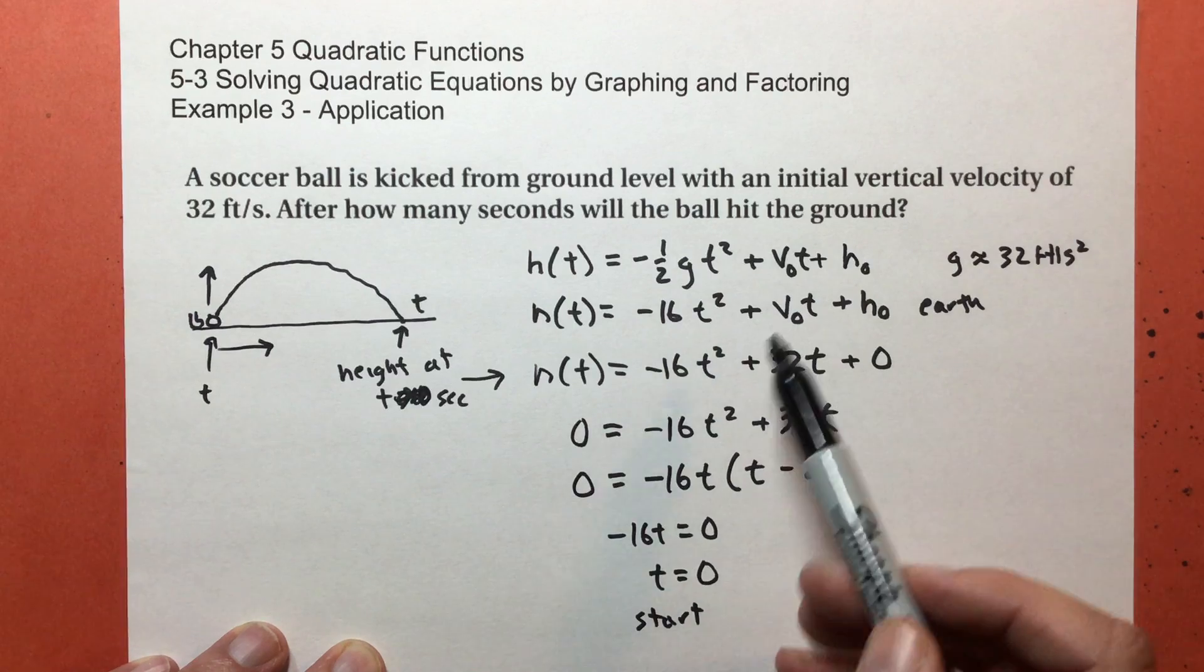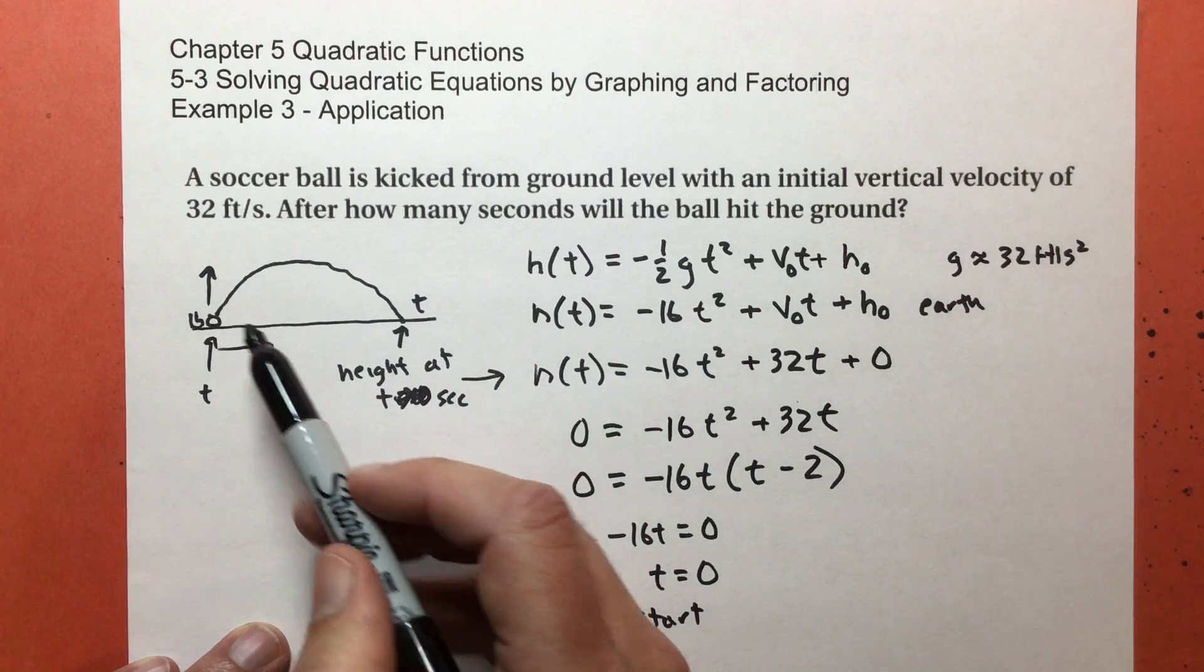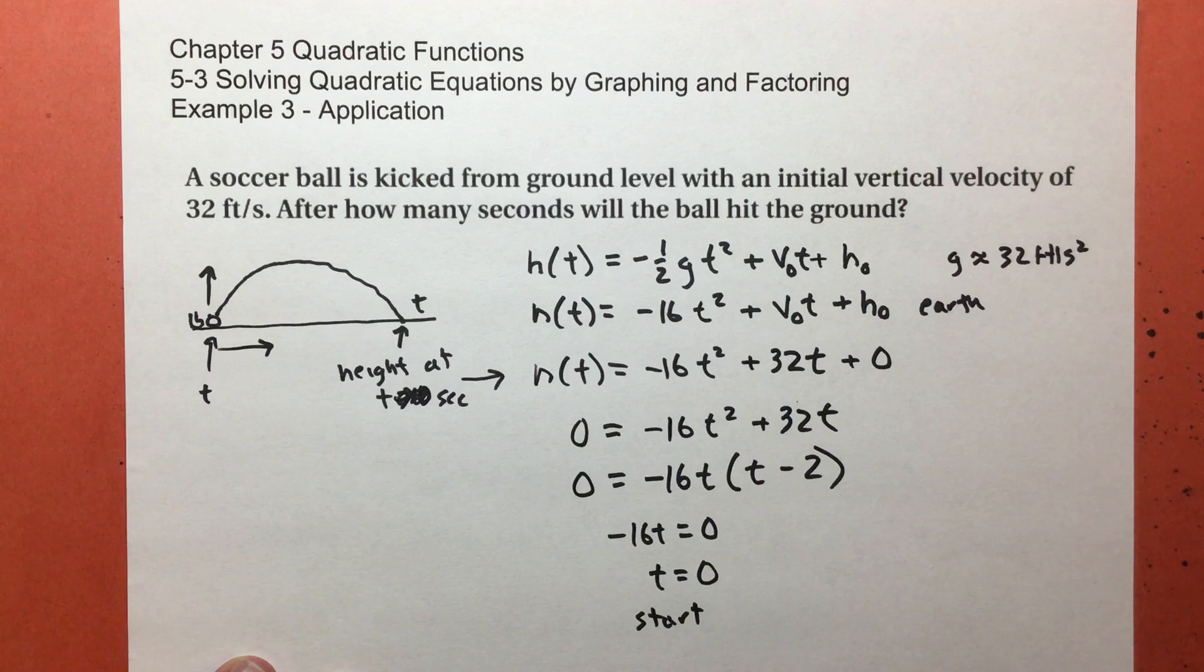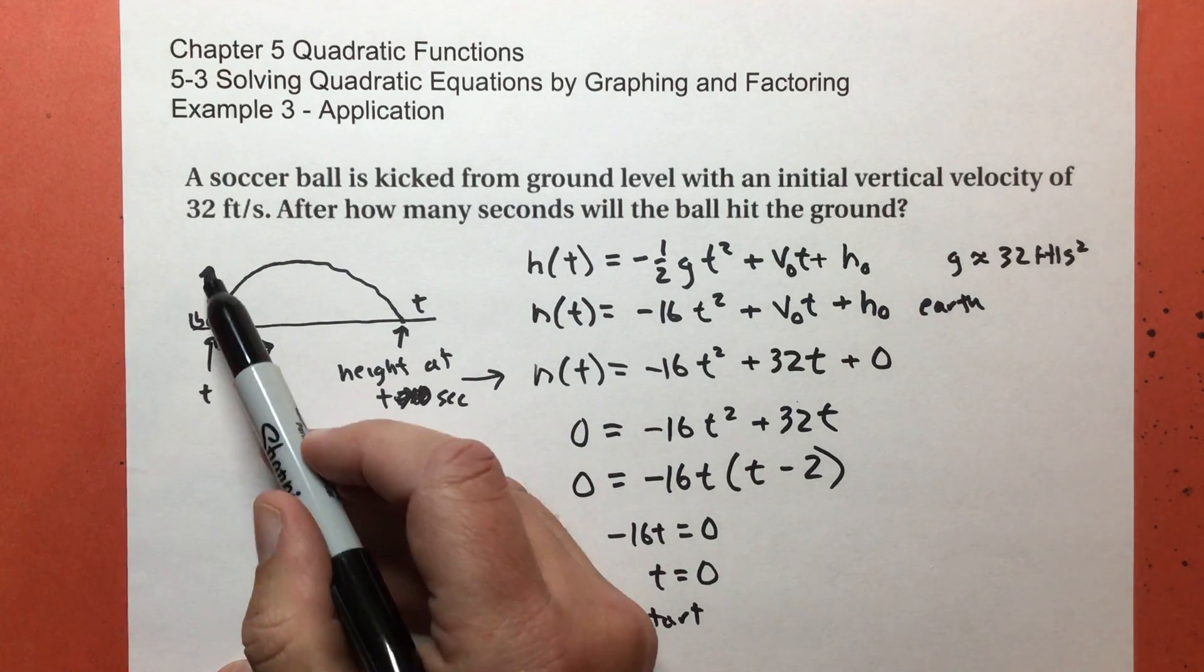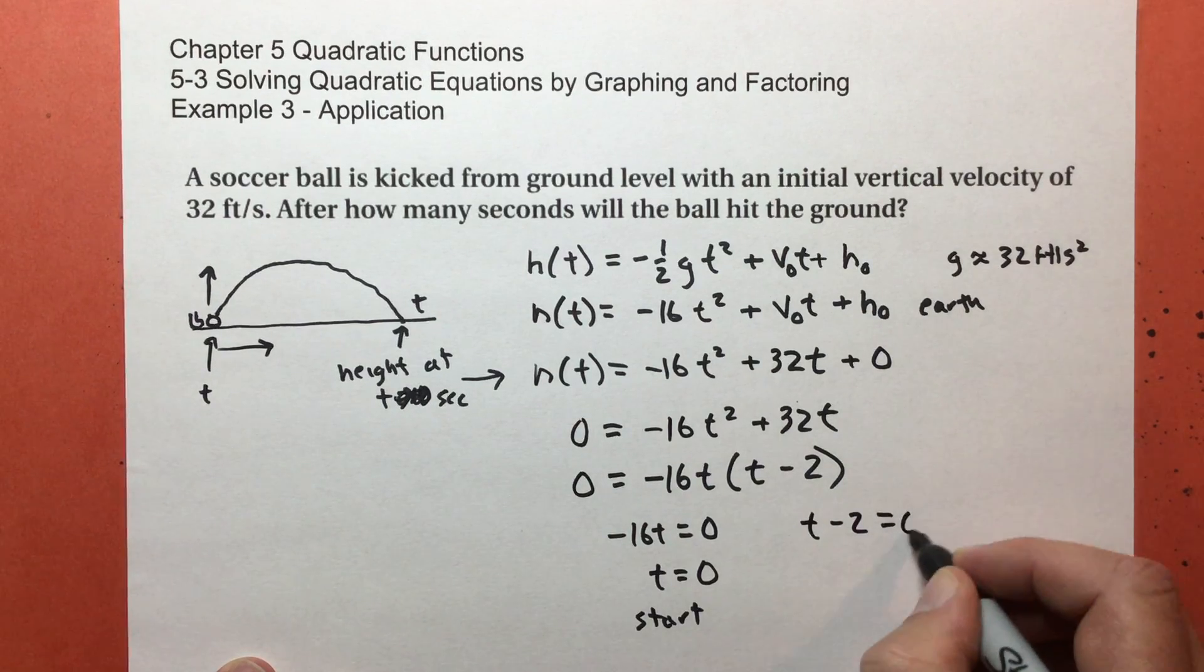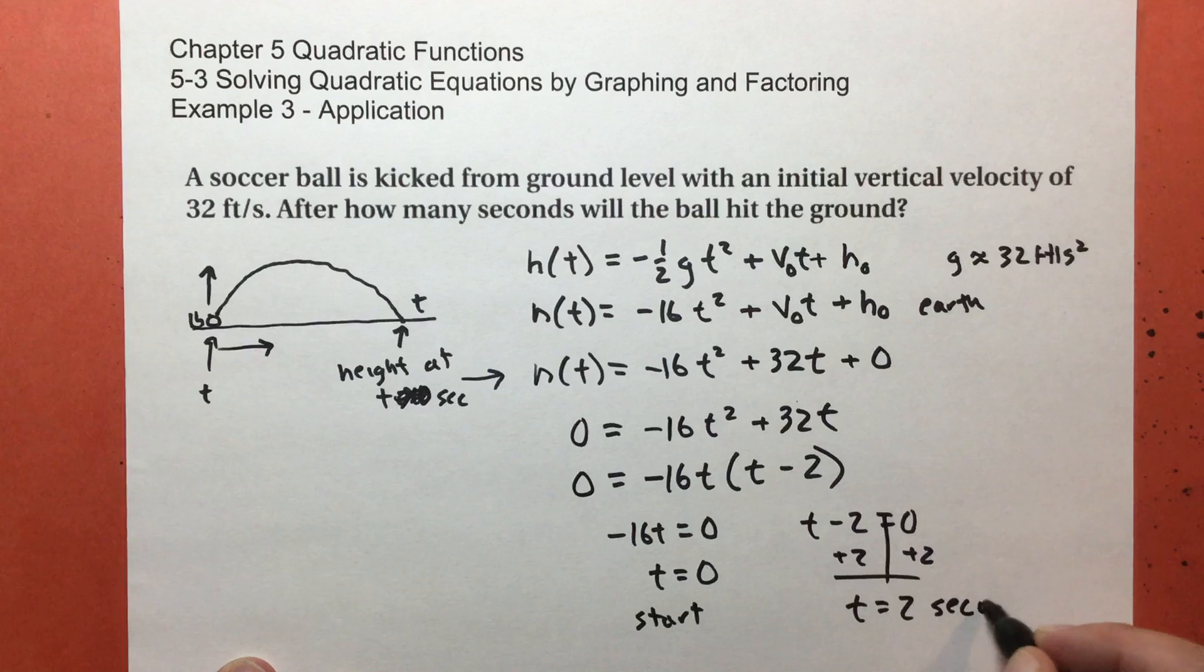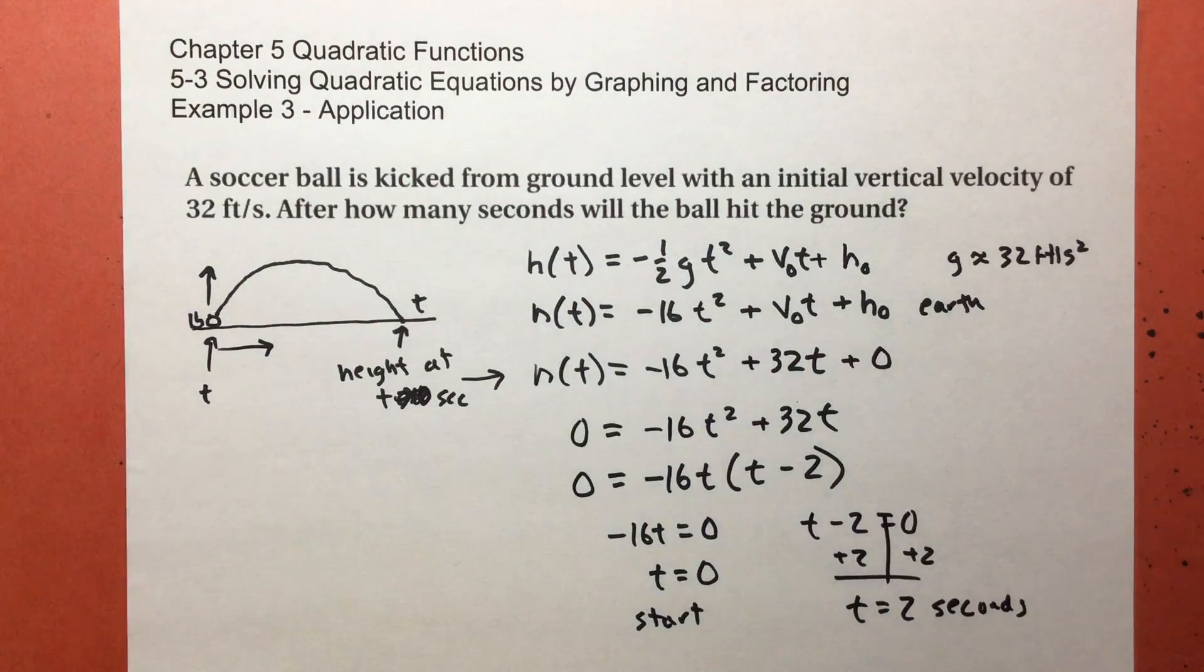Now, if you kick it exactly 32 feet per second upwards, and again, this isn't the class where we get to talk about force vectors. You have a vertical component and a horizontal component of the direction. I'm only dealing with the vertical part. t minus two equals zero. That tells me that at time two seconds, it's going to hit the ground again. Now, obviously, we don't always kick with the same upward force. So the time is not always going to be a nice one. This is where the other skills we're going to be learning in this chapter are going to be important. But in this section, factoring, we're going to try to make things easier so you can factor.